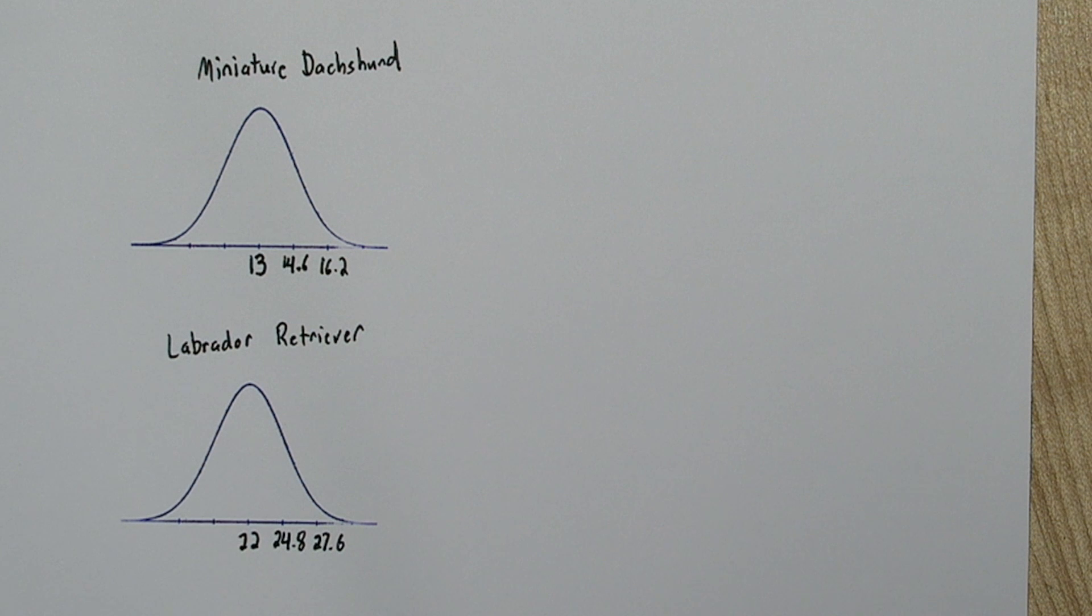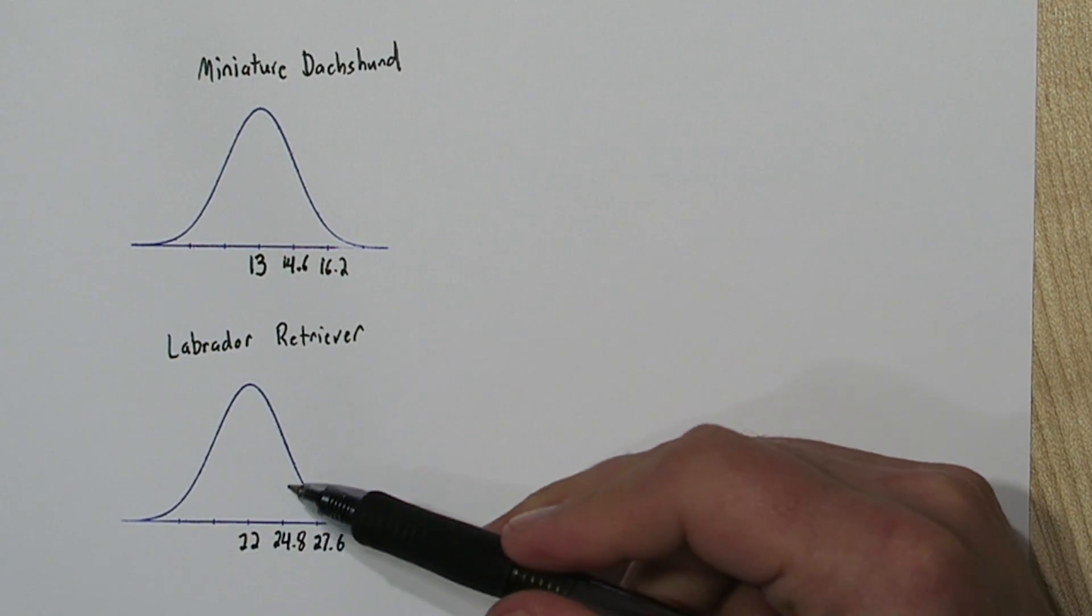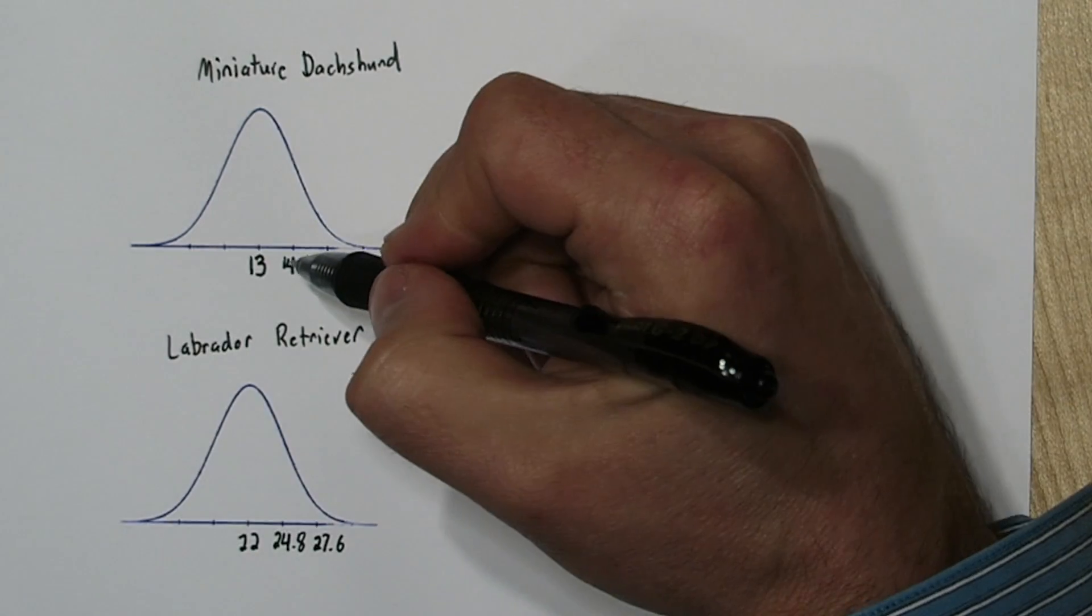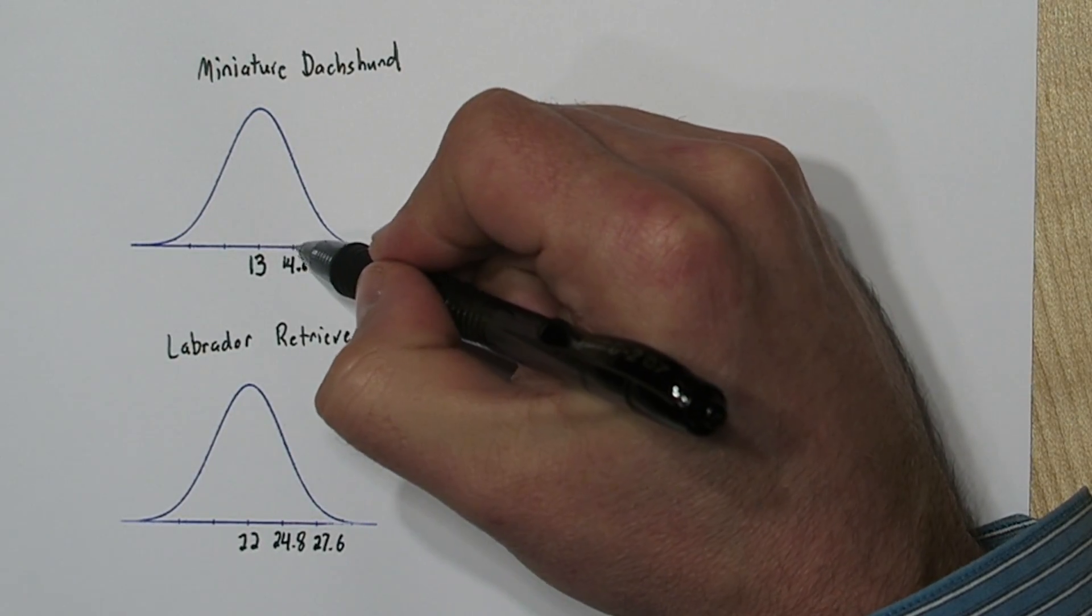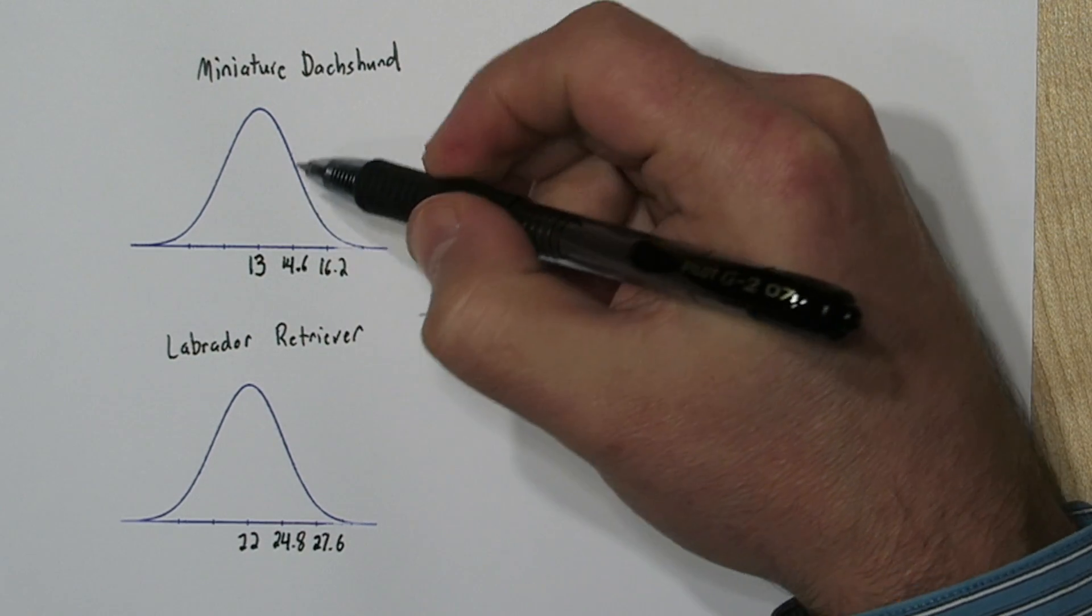Now I'm only labeling in the positive direction because our two speeds of interest are 14.8 and 25. Now we know the 14.8 is somewhere between the 14.6 and 16.2, maybe about right here.